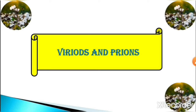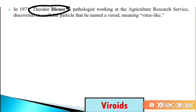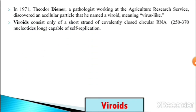In this video lecture we are going to understand viroids and prions from the virology section. In 1971, Theodore Diener, a pathologist working at the Agriculture Research Service, discovered an unusual particle that he named a viroid, meaning virus-like.